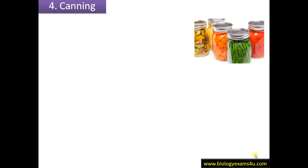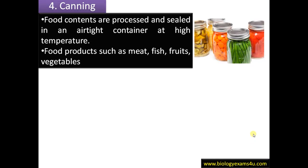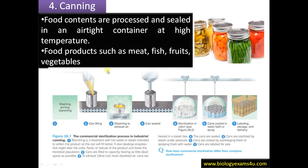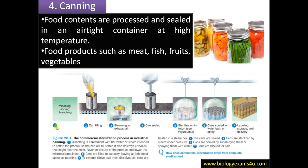Canning is a common process where food is processed and sealed in airtight containers at high temperature, practiced for a variety of foods including meat, fish, fruits, and vegetables. The commercial sterilization process in canning involves washing and sorting, followed by blanching — treating food with hot water to soften it — then sealing the cans, sterilization, cooling, labeling, storage, and delivery. Being airtight, there is no microbial growth for an extended time.